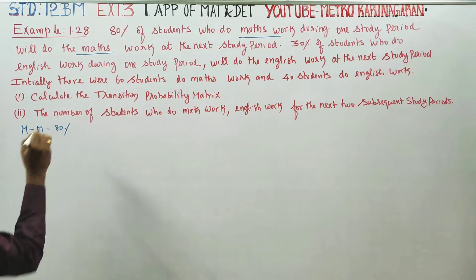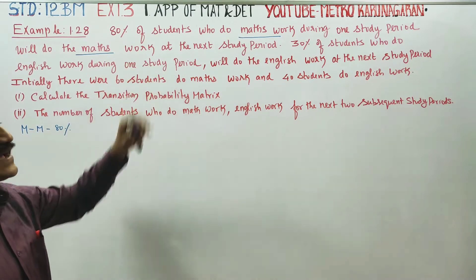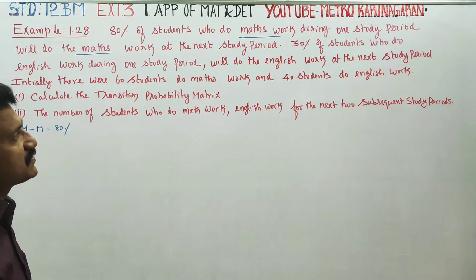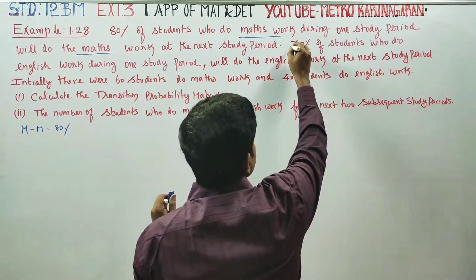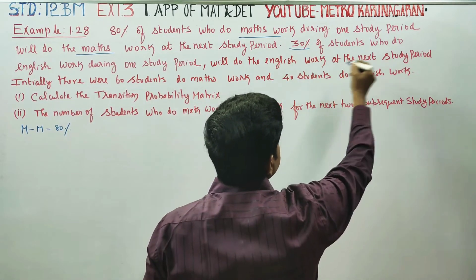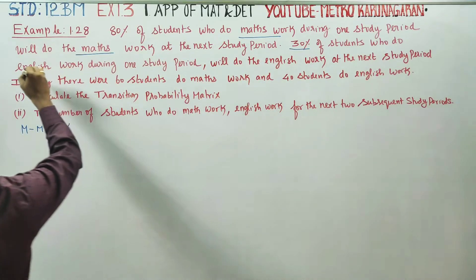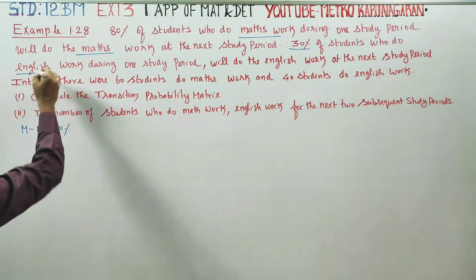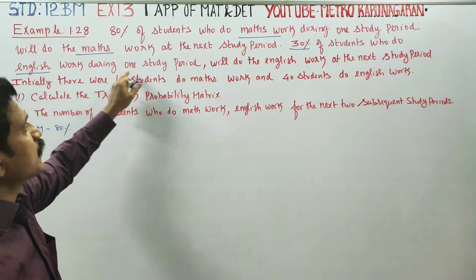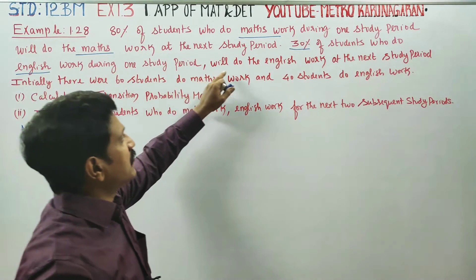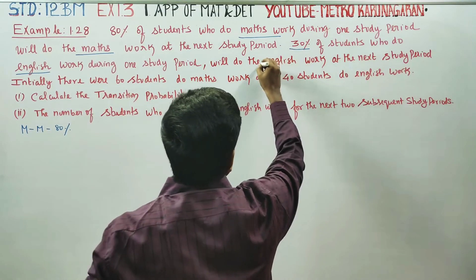Maths followed by Maths is 80%. 30% of the students who do English during one study period will do English work at the next study period.